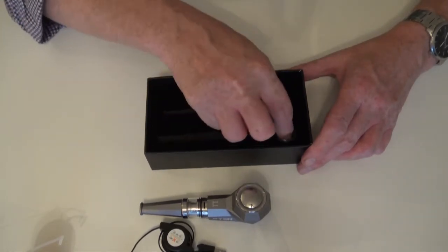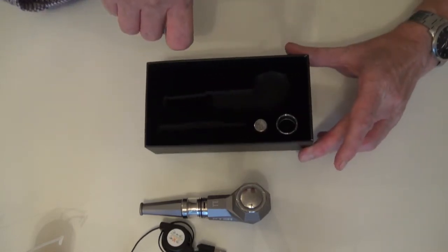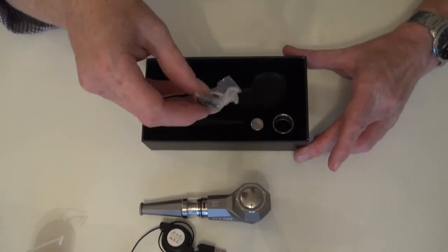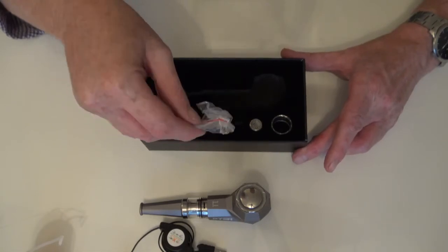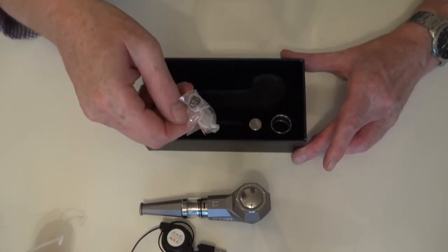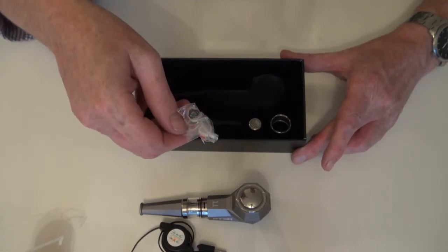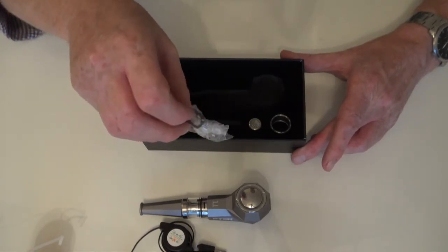It also comes with a spare glass for your tank in case you break it. And all the washers that you'll need to stop that tank from leaking. If you need to replace the washers.